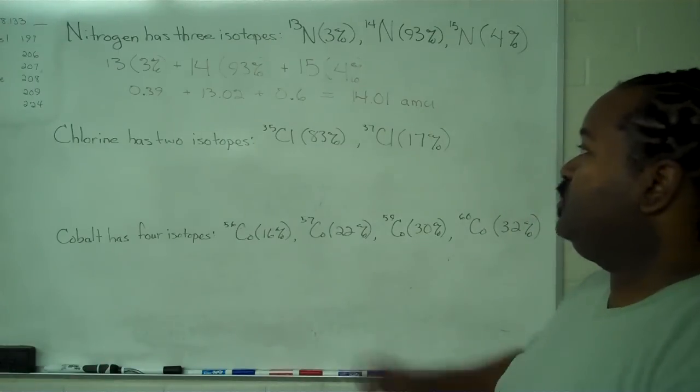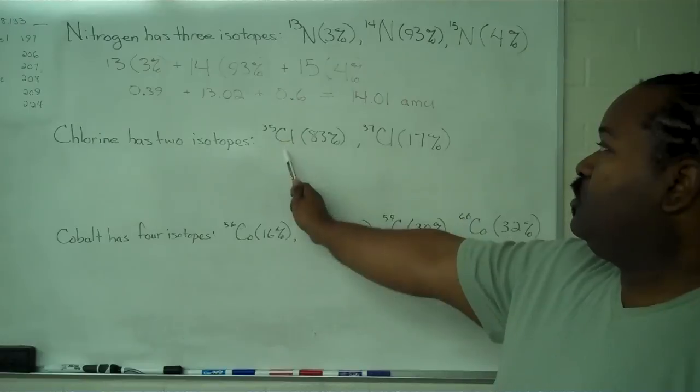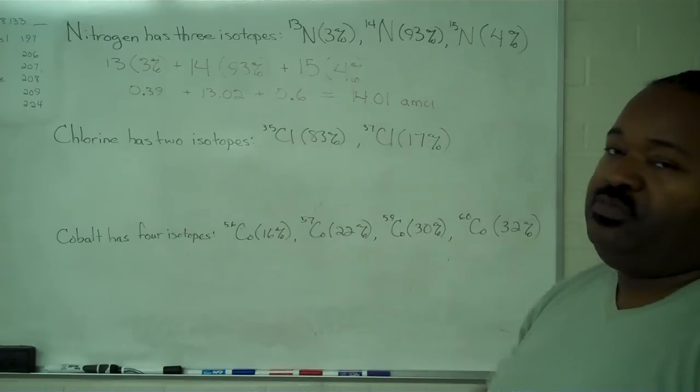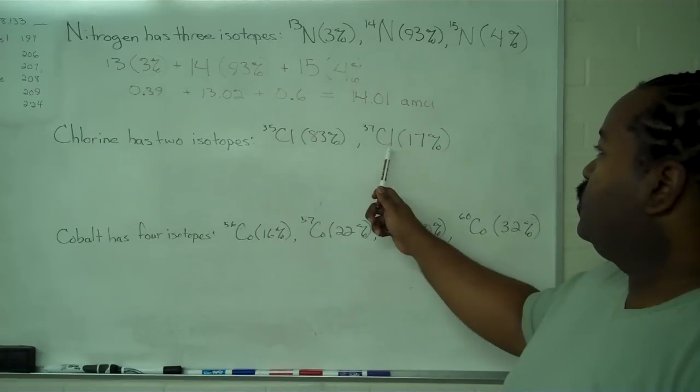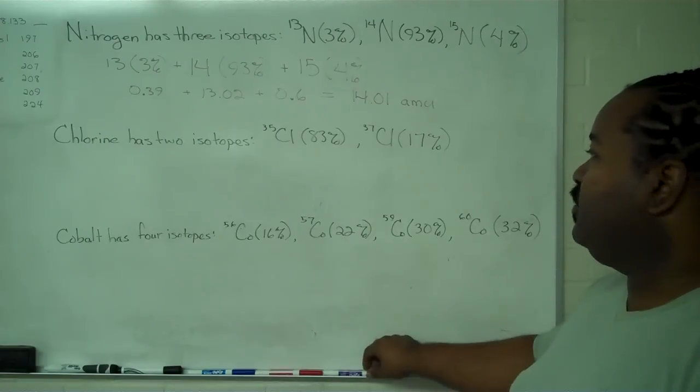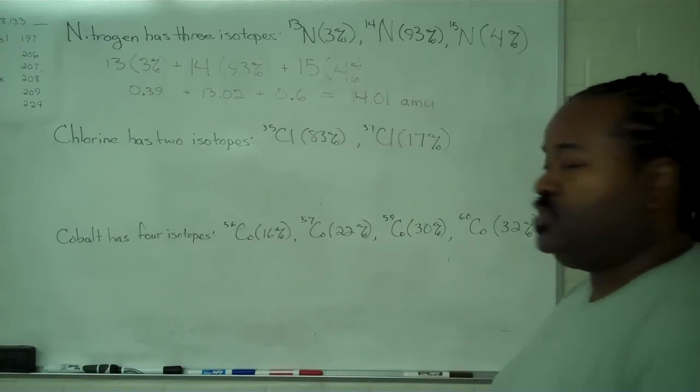So that's our first example. Our next one: chlorine with two isotopes. Chlorine 35 has a relative abundance of 83%. Chlorine 37 has a relative abundance of 17%. So the same thing applies.